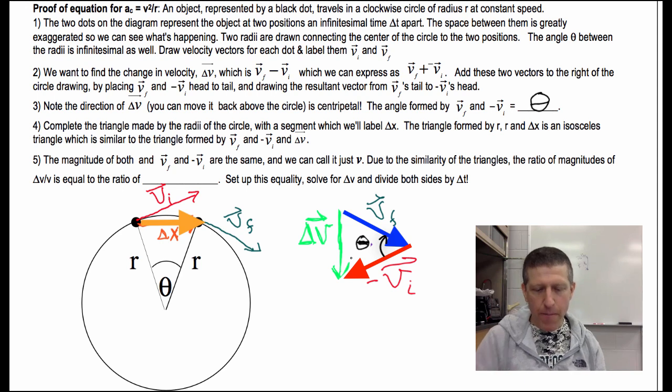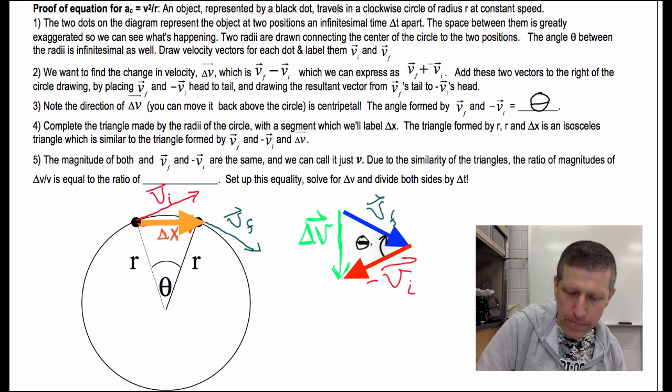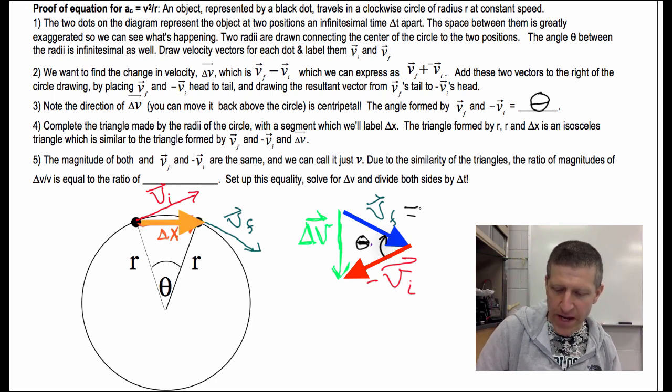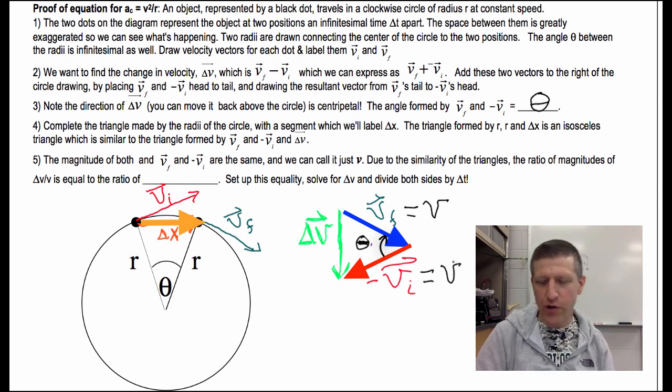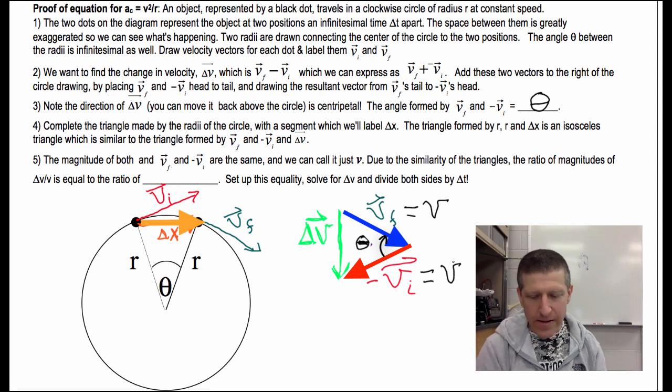Now all we've got to do is figure out, well, let's do this. The magnitude of these, are these different in magnitude? V final, right over here, and V initial. Are they different in magnitude? They're the same in magnitude. I'm just going to call both of those, I'm just going to call them V. The speed, this is going at constant speed, so the speed isn't changing. So we'll just call those V, that's the magnitude of both.